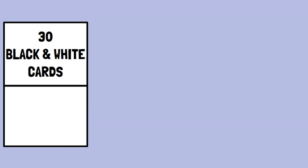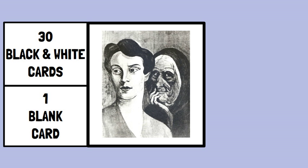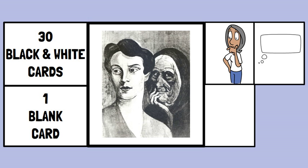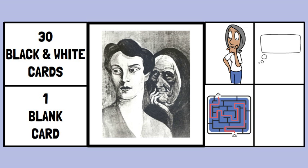The test consists of 30 black and white picture cards and one blank card. Each card features a vague image or scene. The participant is asked to create a story about each picture, detailing what is happening, the character's thoughts and feelings, and the outcome of the situation. The stories constructed serve as a window into the person's inner world.